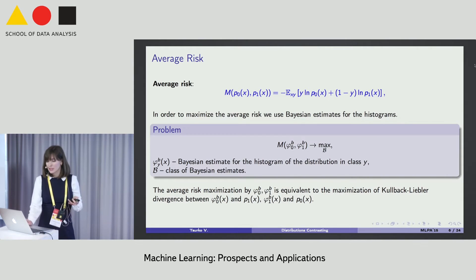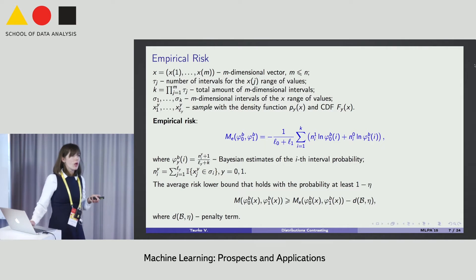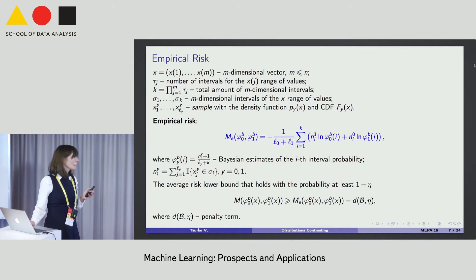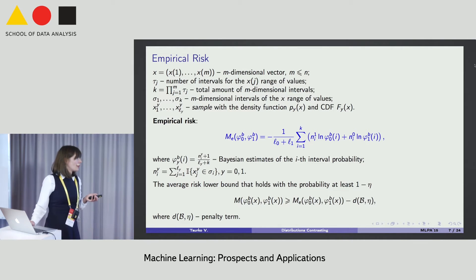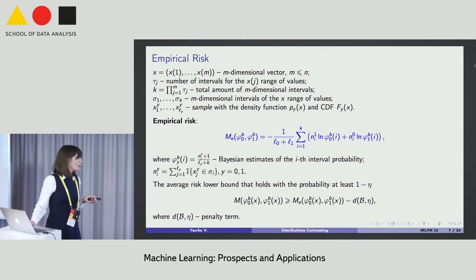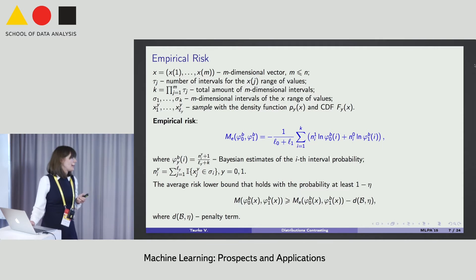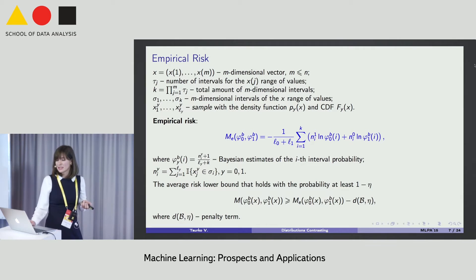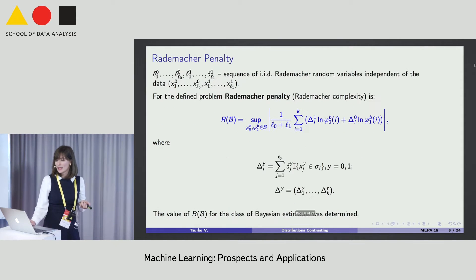But the real distributions in classes are unknown. To estimate the average risk, I use results from empirical process theory. I use the empirical risk — the average value of the loss function on the sample — and I use the lower bound for the average risk, which represents the empirical risk minus a penalty term. To calculate this penalty term, I use the Rademacher complexity.